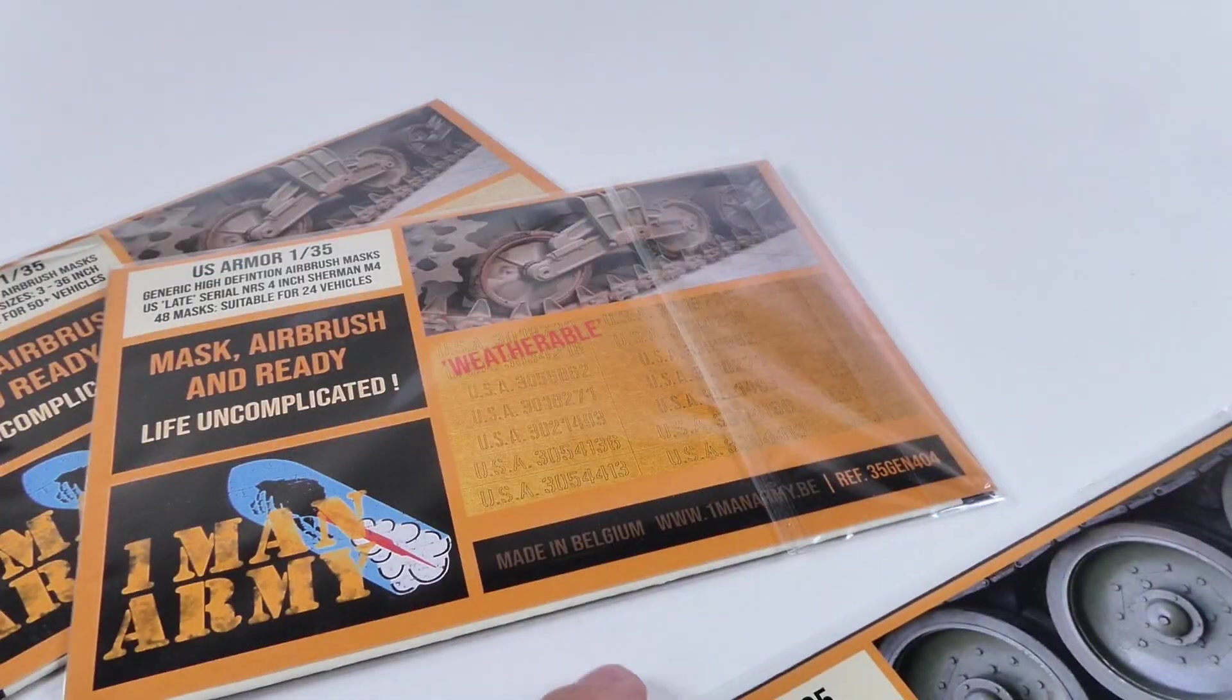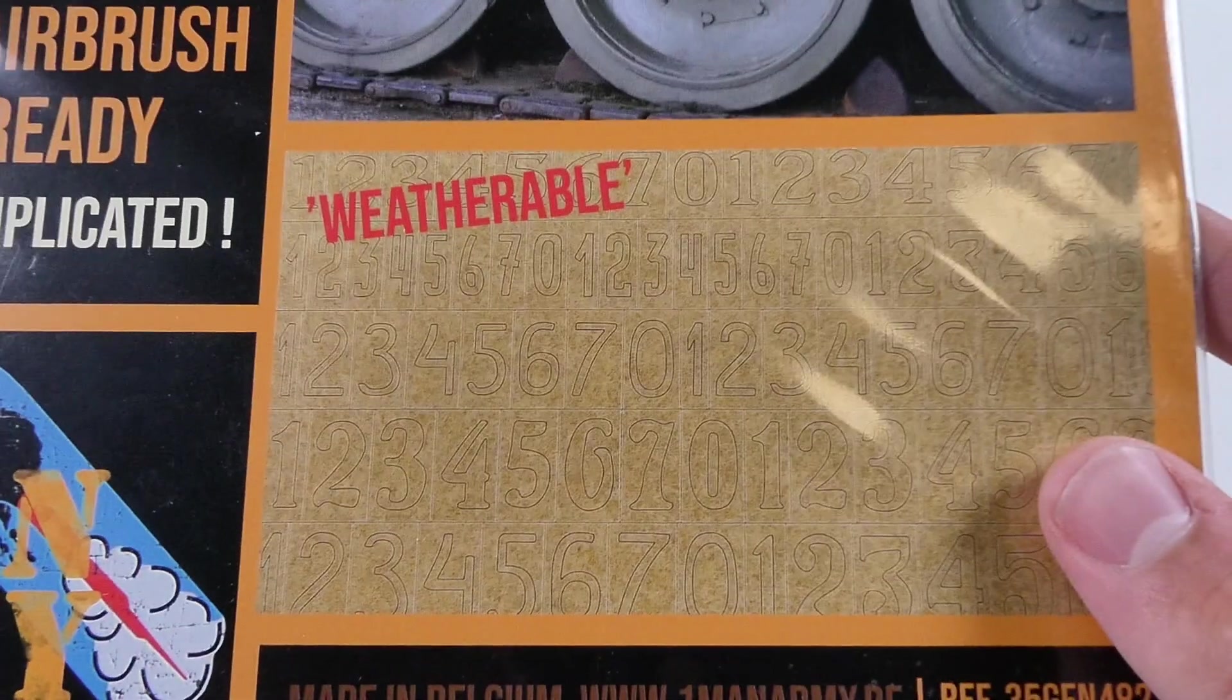As of now, there are two United States sets, three German sets, and one Russian set, and they look really nice. Let's start with the U.S. sets.